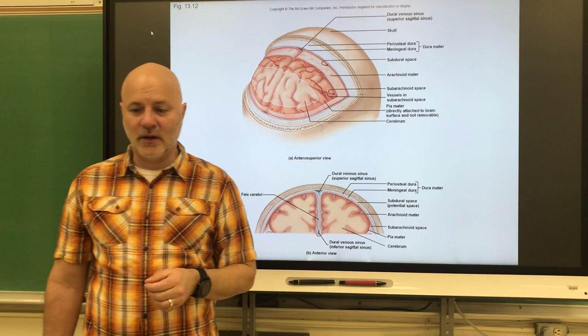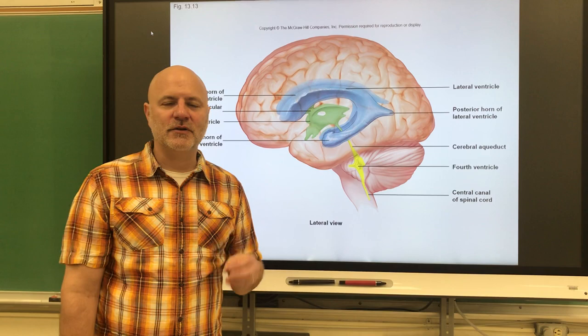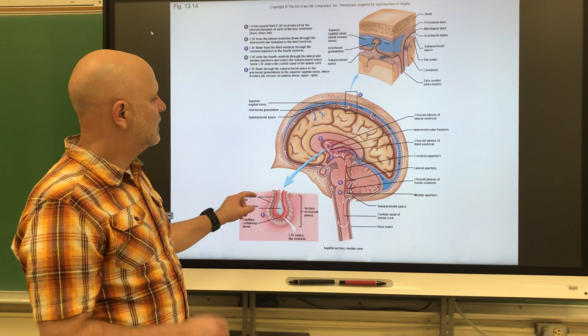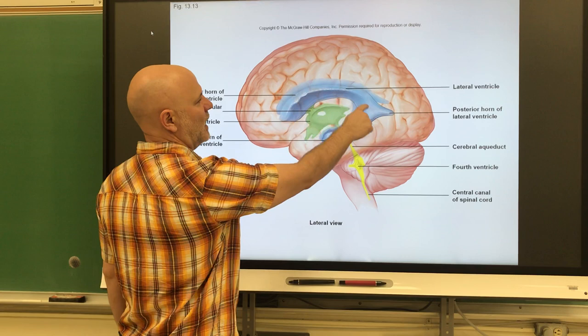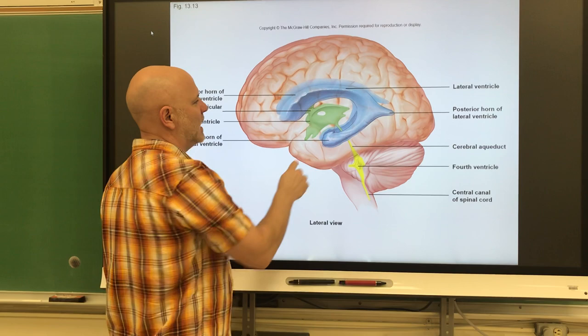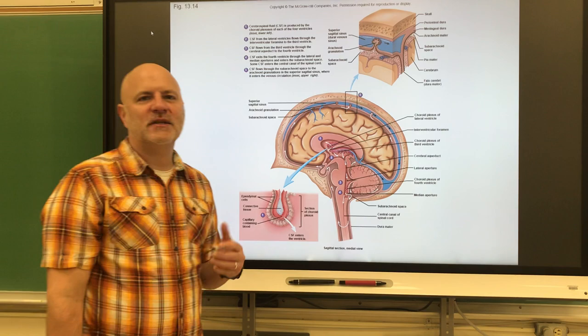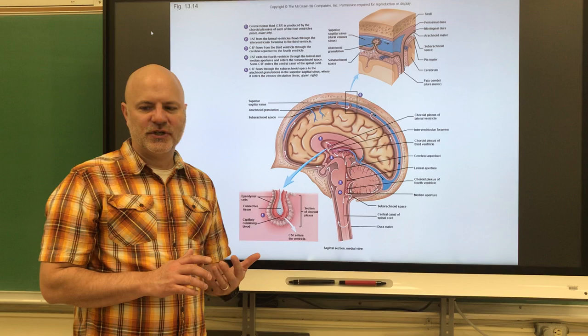Ventricles are internal chambers within the brain filled with cerebrospinal fluid. Looking at this picture, we can see the first and second lateral ventricles (left and right sides), the third ventricle, and the fourth ventricle. Each ventricle has a choroid plexus — a network of blood capillaries that produces cerebrospinal fluid through a filtration process.